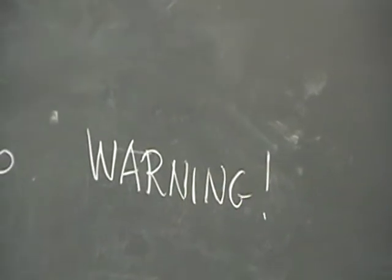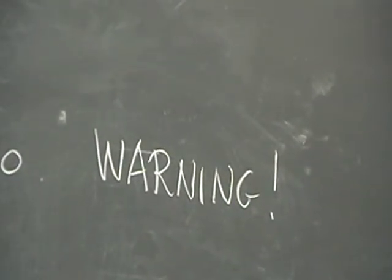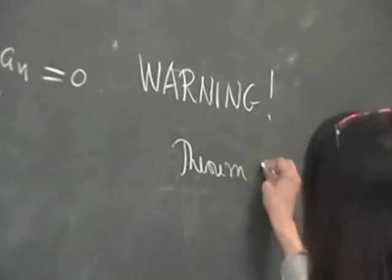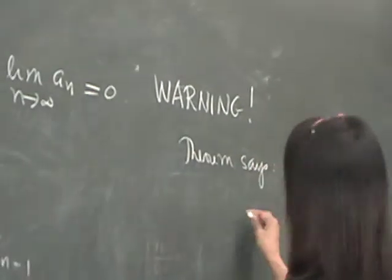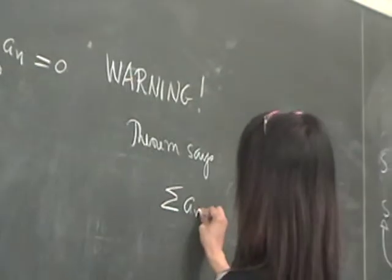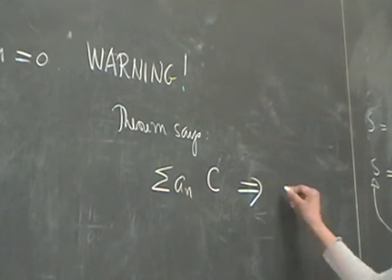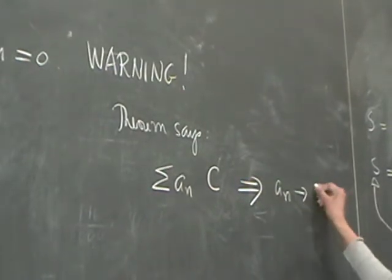Remember logic, right? What did the theorem say? The theorem says what? Series A sub N is C implies, if we use the implication, what? A sub N goes to 0.